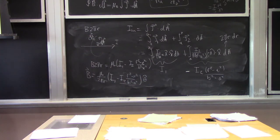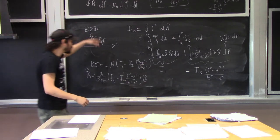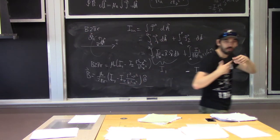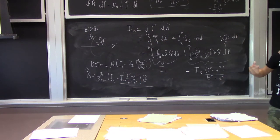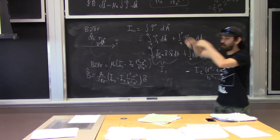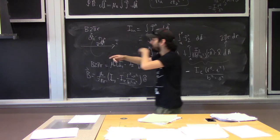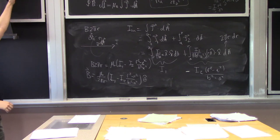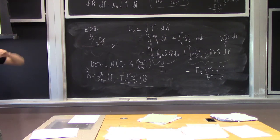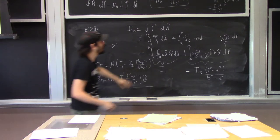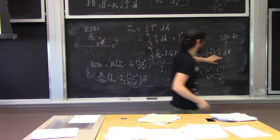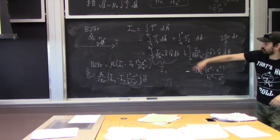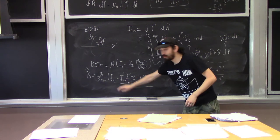You'll realize something here: the magnetic field should be in the opposite direction for the two currents, because one produces a magnetic field into the board above the wire and the other produces one out of the board. The negative sign from the dot product is how I'm showing that.